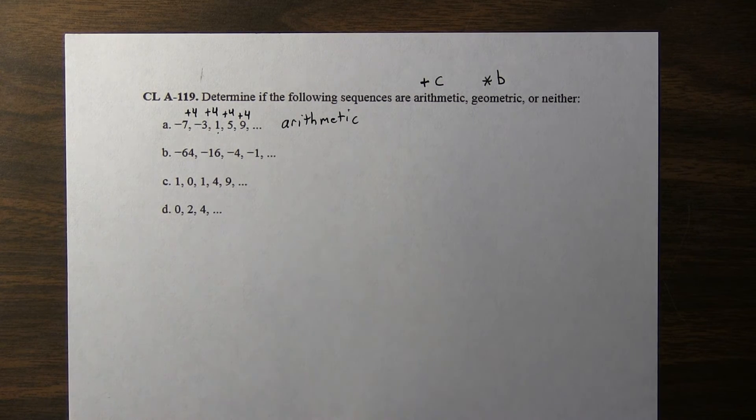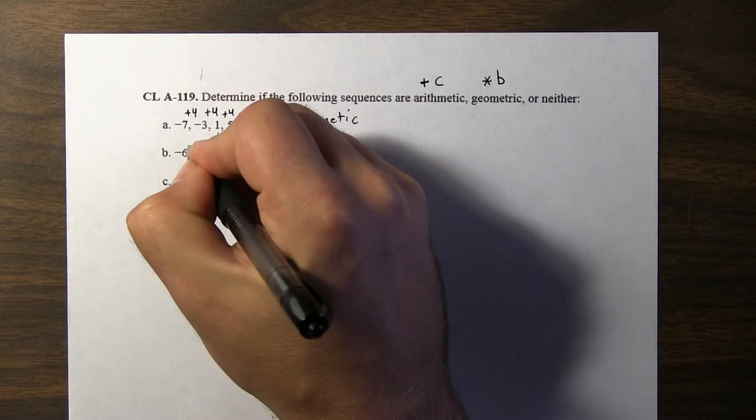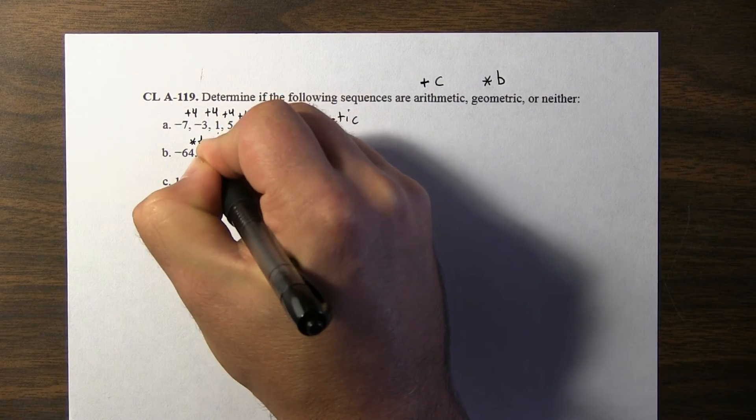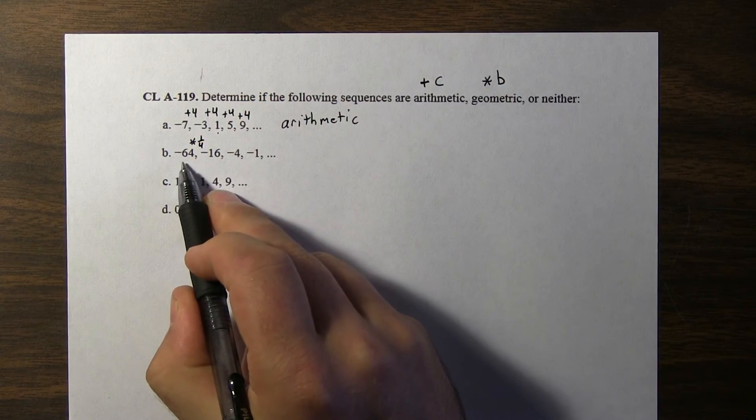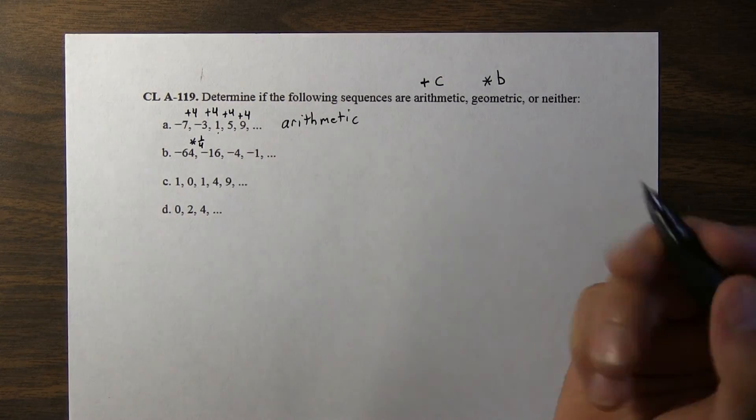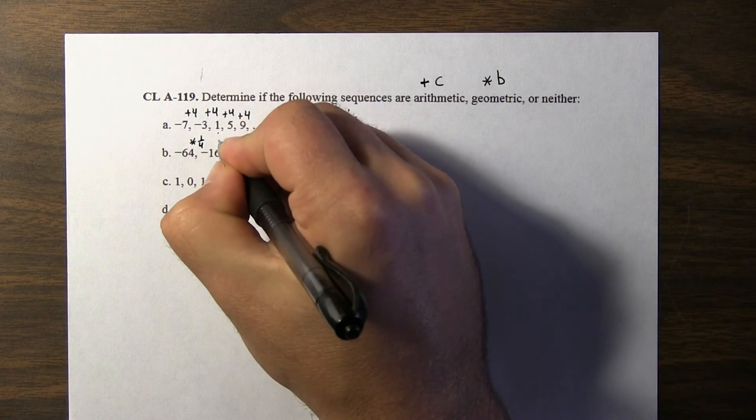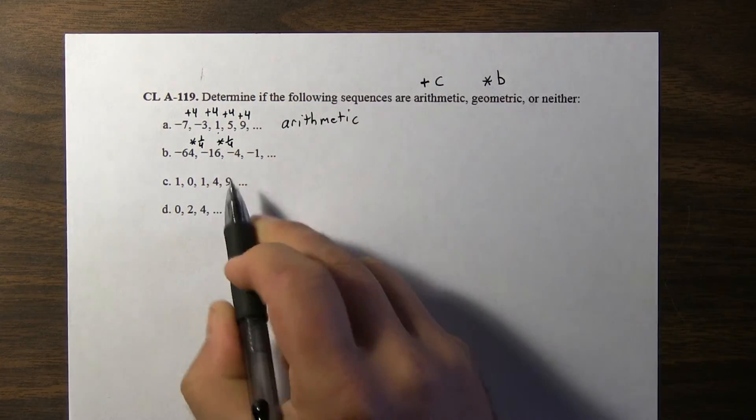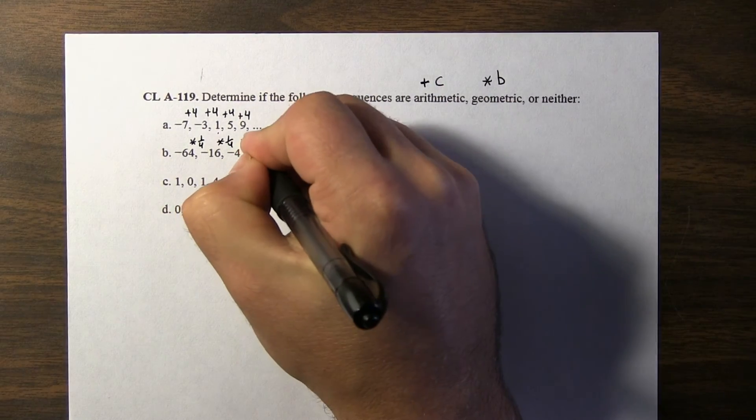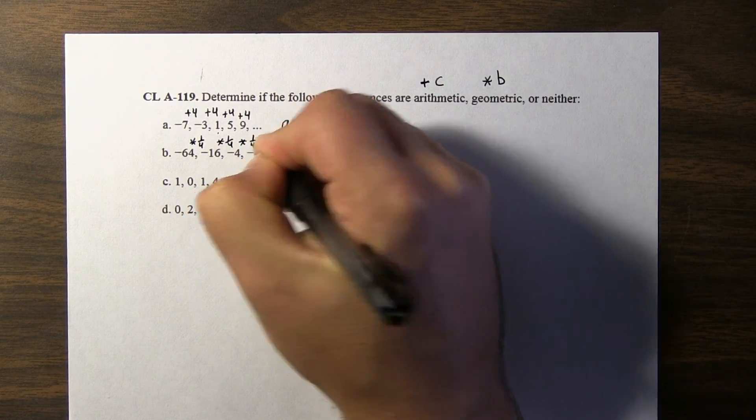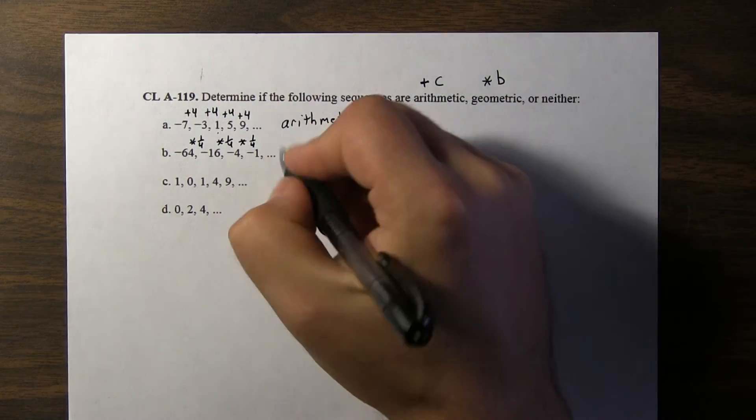if you divide each of these terms by 4, you get the next term. But another way of saying divided by 4 is multiplying by one fourth. So negative 64 times one fourth is negative 16. Then negative 16 times one fourth is negative 4, and negative 4 times one fourth is negative 1. So this is geometric.